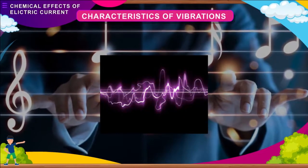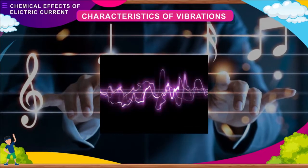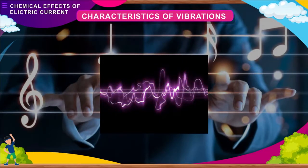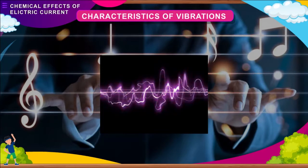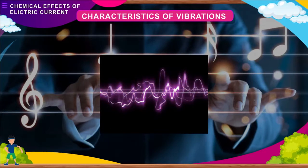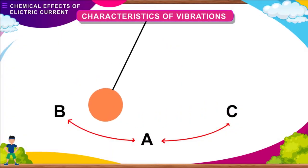Vibrations are produced rapidly in all directions, so it is not easy to observe them clearly. To study their characteristics, vibrations are produced at a slower rate by using an arrangement termed as a simple pendulum.